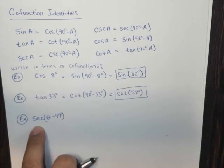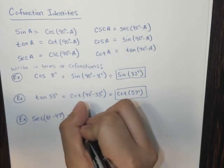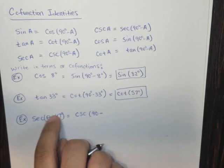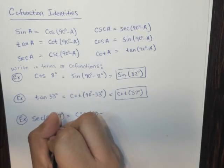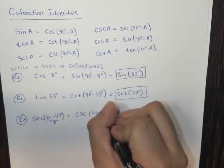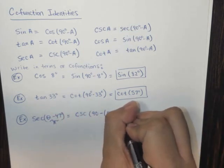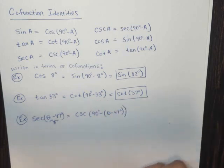So the secant - the cofunction is going to be the cosecant. So we're going to look at cosecant of 90 minus, now I'm going to call all of this my A, all of this. So 90 minus theta minus 47. Look something like that and then close it off.